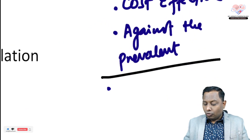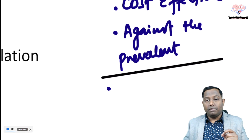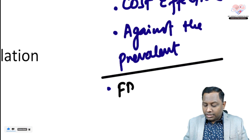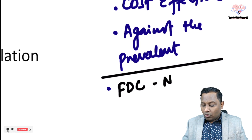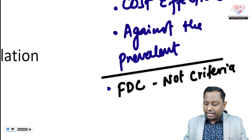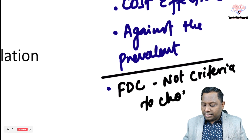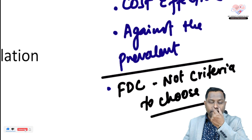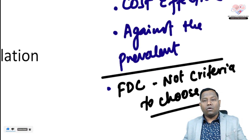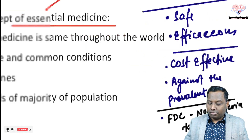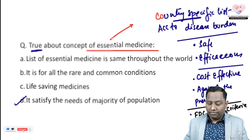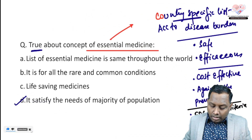Essential medicines satisfy the needs of the majority of the population — that is the correct true statement. They are country-specific according to disease burden. Fixed dose combinations may be preferred (e.g., TB), but it is not an essential criterion for all essential medicines. Fixed dose combination is not always required across all disease conditions.